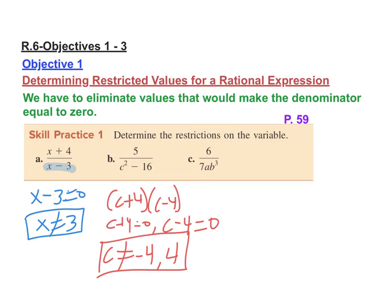And the reason is it would make this bottom equal zero, which is bad. And then finally on the last one, when I have two variables, that one's actually pretty straightforward. It's just 7ab cubed equals zero. So either a equals zero or b equals zero, and that would make denominator equal to zero. So a can't be zero, b can't be zero, and those are my restricted values. Pretty straightforward. What values will make denominators equal zero, and we throw them out? That's the restriction.